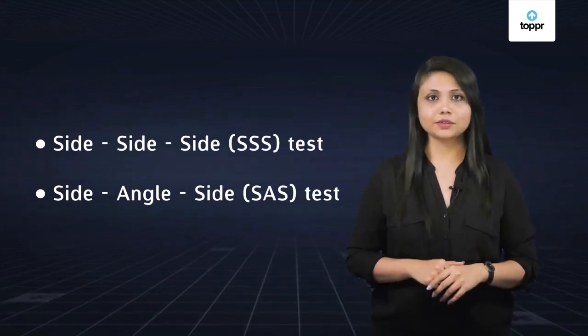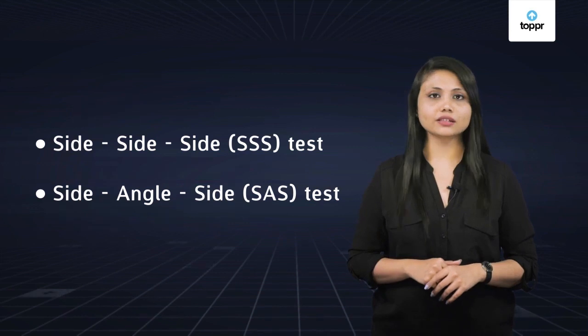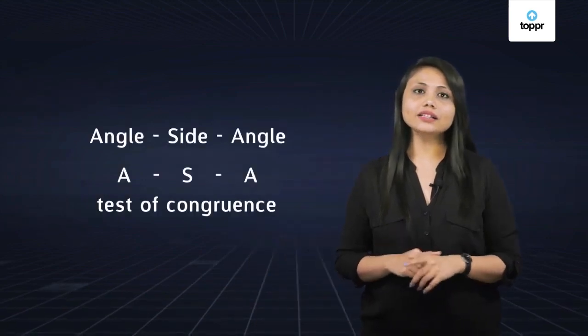In our earlier sessions, we learned about the congruence of triangles and how to determine if two triangles are congruent using some axioms. Apart from these two very important axioms that we learned, there are two more rules for testing congruence among triangles. Let's learn about them in this session. The first one is the ASA or Angle-Side-Angle test of congruence.